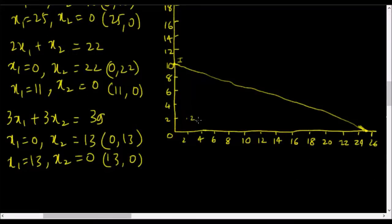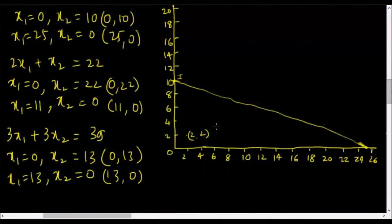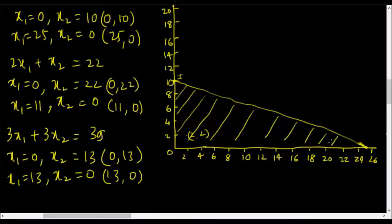Let me pick the point (2,2) below the line and insert it in the first constraint. 4 times 2 is 8, and 10 times 2 is 20 — so 8 plus 20 equals 28, which is definitely less than 100. This means (2,2) satisfies the constraint inequality, which also means that any point below this line will satisfy the first constraint. I'll shade this entire area to denote the region satisfying the first constraint.